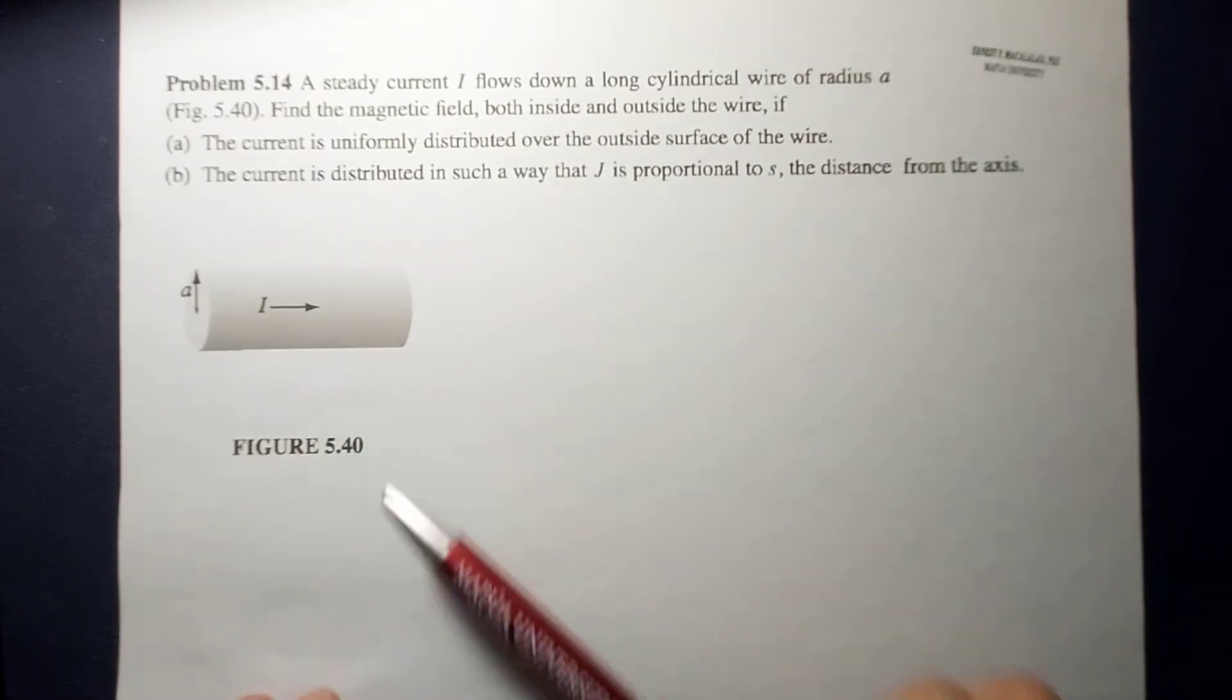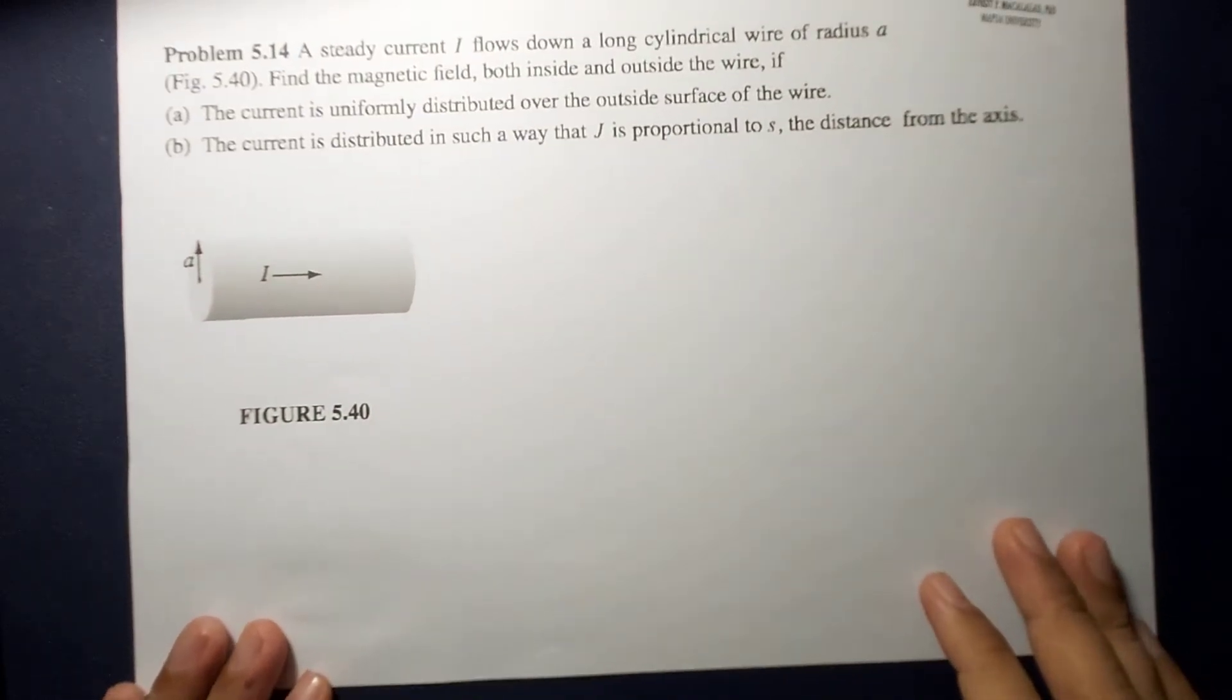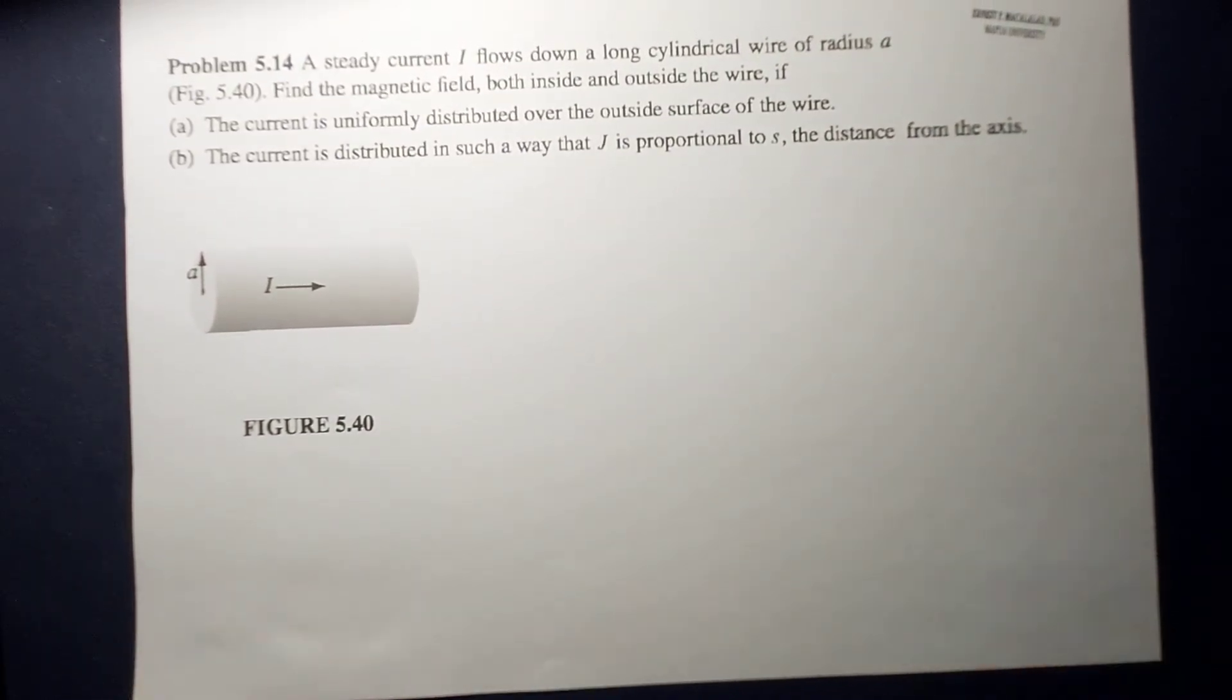So as you will notice, we're going to use cylindrical coordinate system here. Now, to start with, similar when you solve Gauss's law, here we're going to look into two Amperian loops.